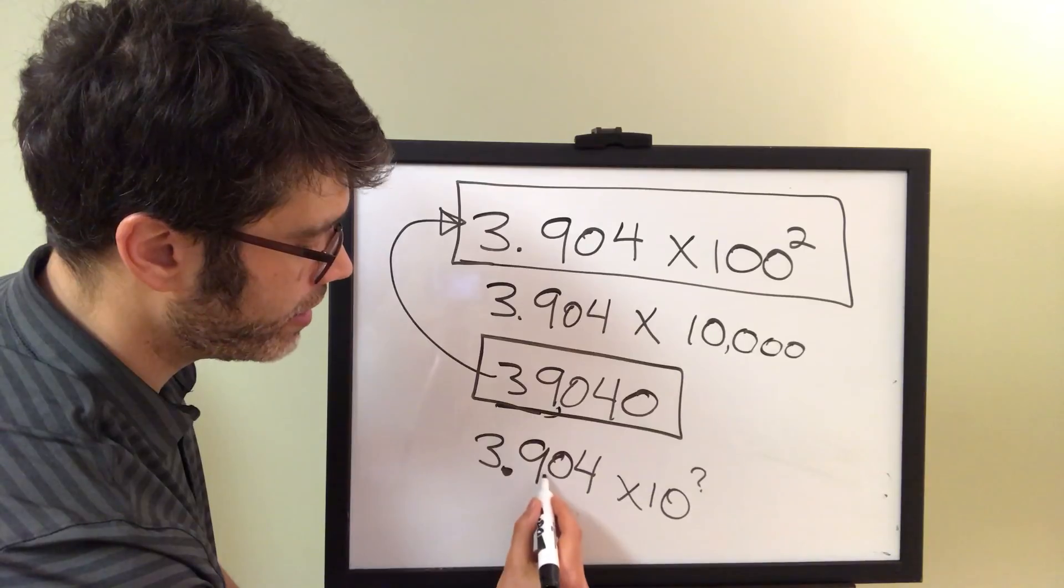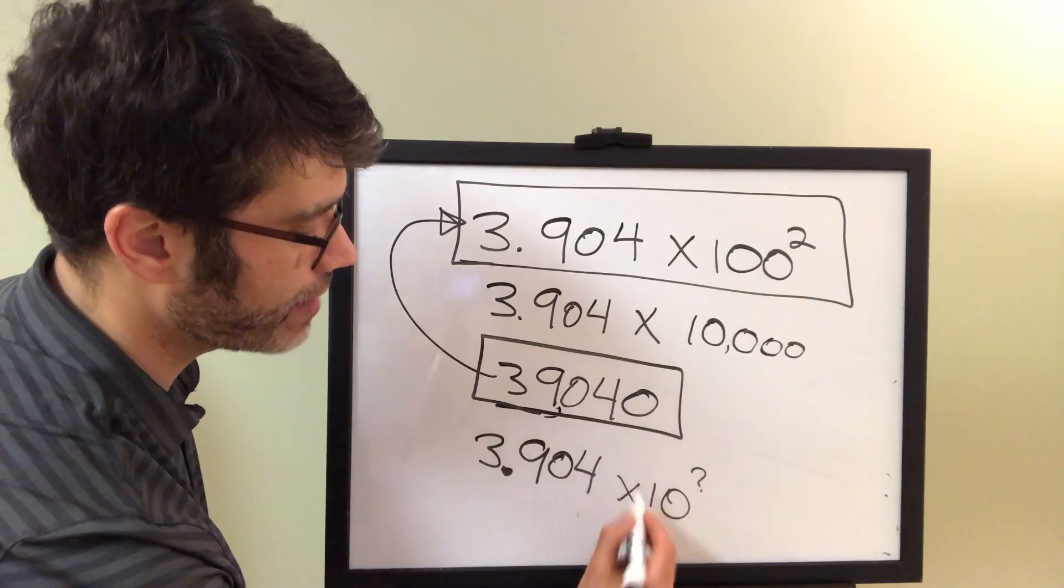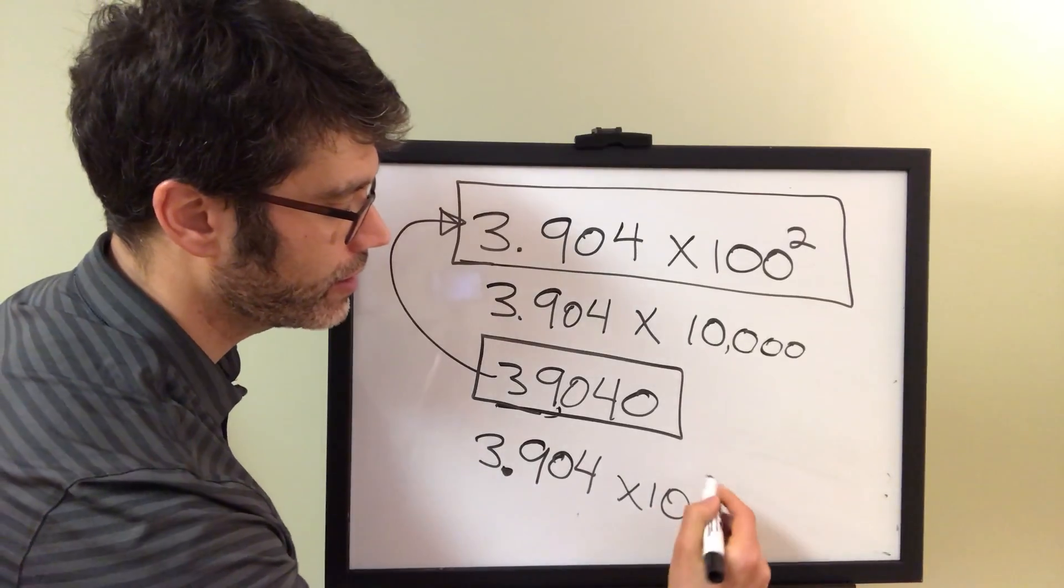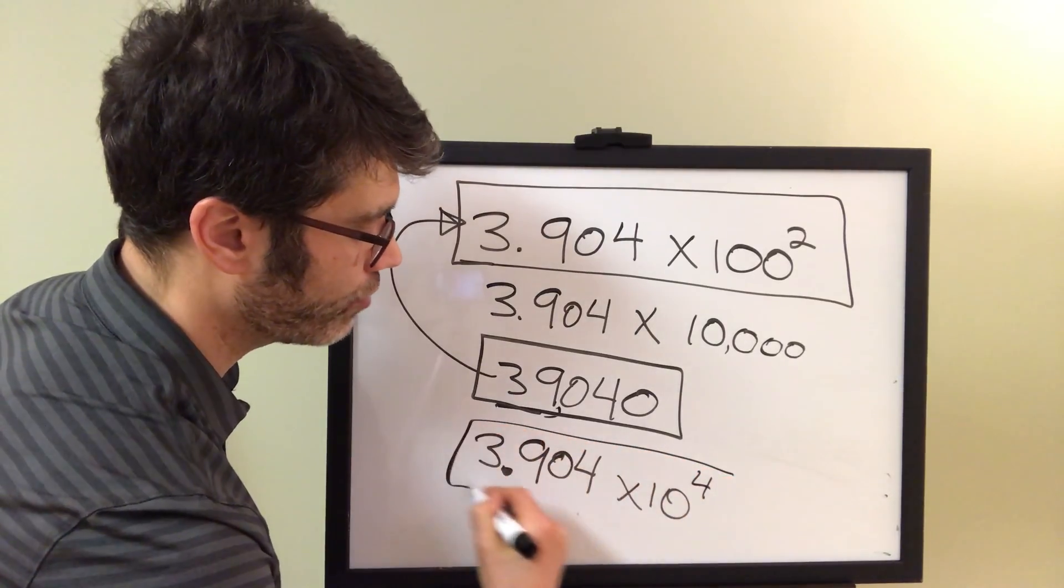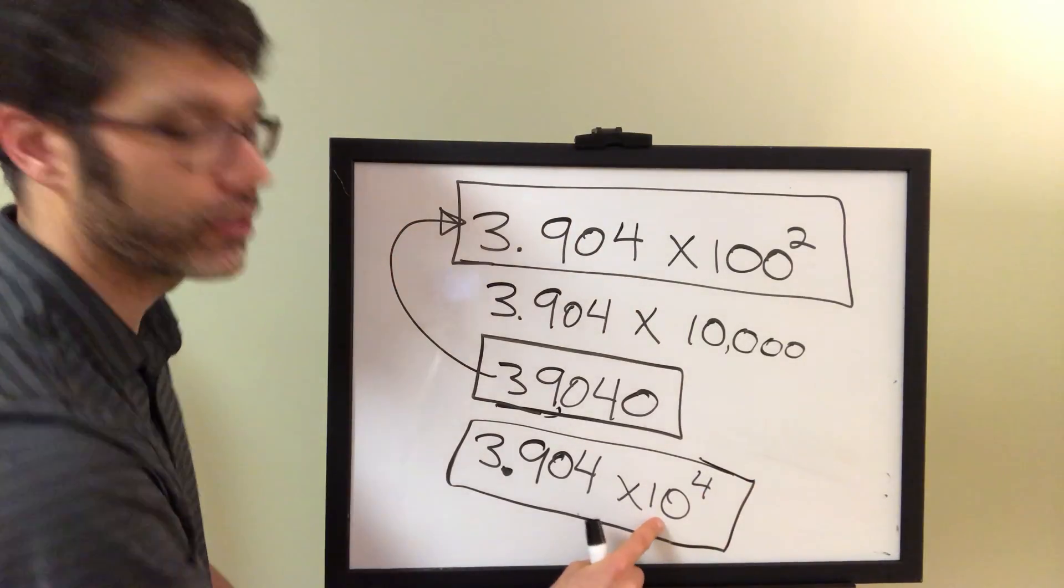So it would be one, two, three, and then four times. So that means that the true scientific notation would be 3.904 times 10 to the fourth.